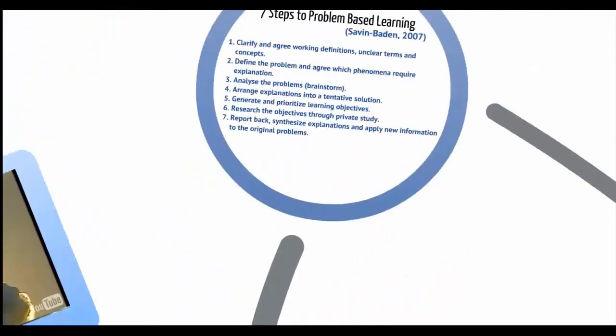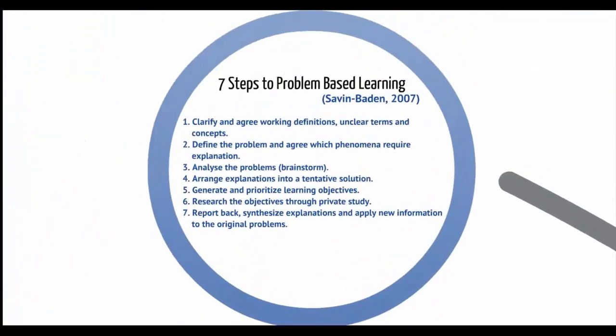For the purposes of our learning in this course, we'll be using some of these basic principles from Savin-Baden. Clarify and agree on the working definitions of terms that are unclear to you. Define the problem and agree what requires explanation. Brainstorm and analyze the problem, and arrange some explanations into a tentative solution. Prioritize your learning objectives, take a look at those objectives in self-study, and then report back to your group.